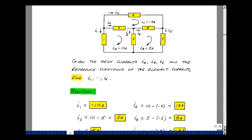Current i3 is agreeing with i_a, disagreeing with i_b. So i_a minus i_b, 5 amps. Current in element 4 agrees with i_b, disagrees with i_c. 5 minus a minus 3 gives us 8 amps.